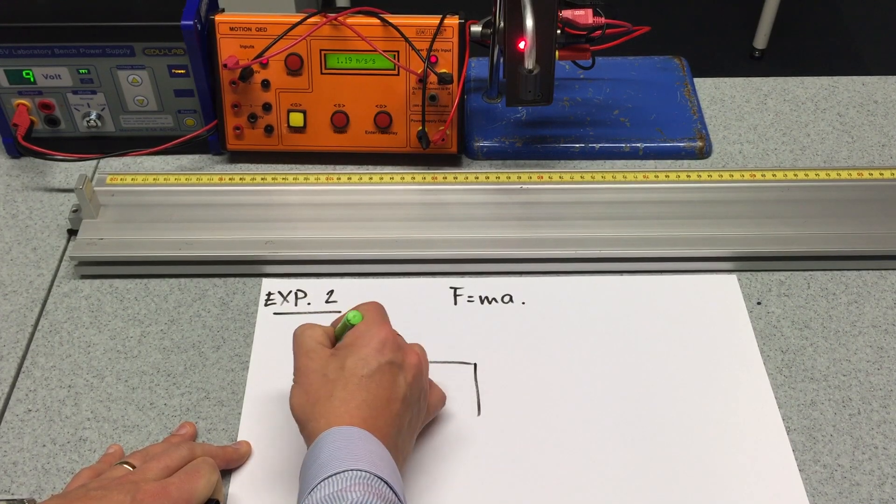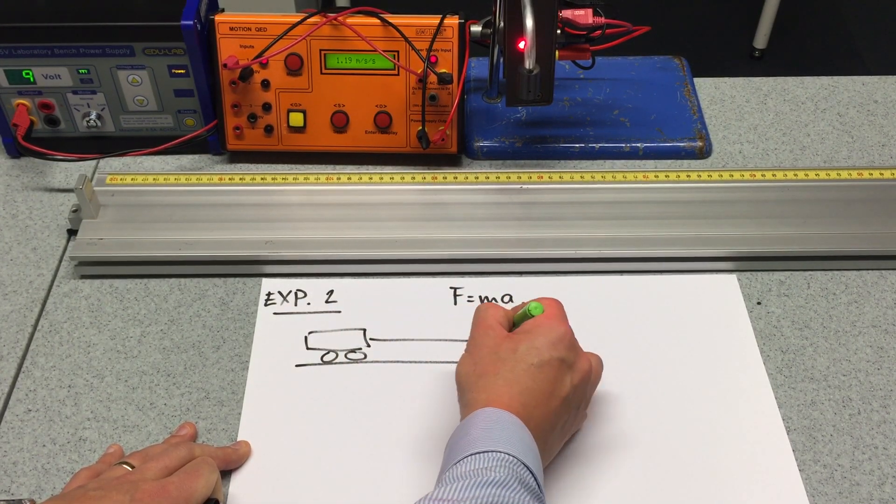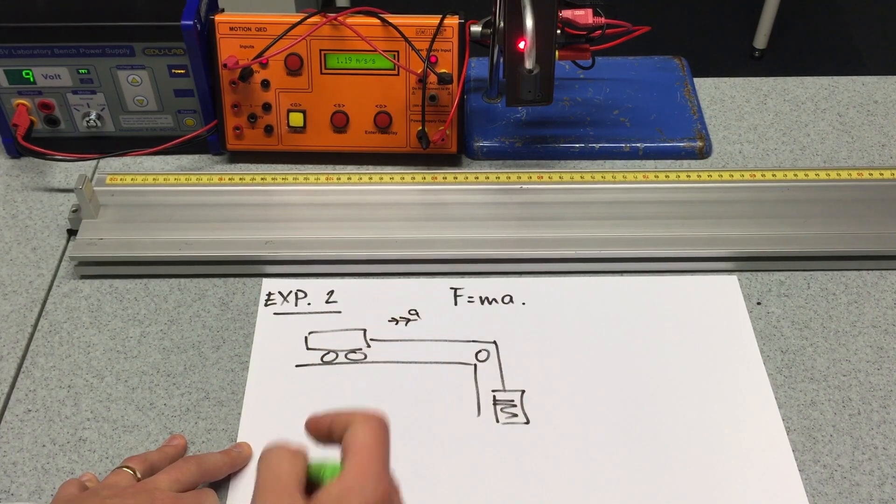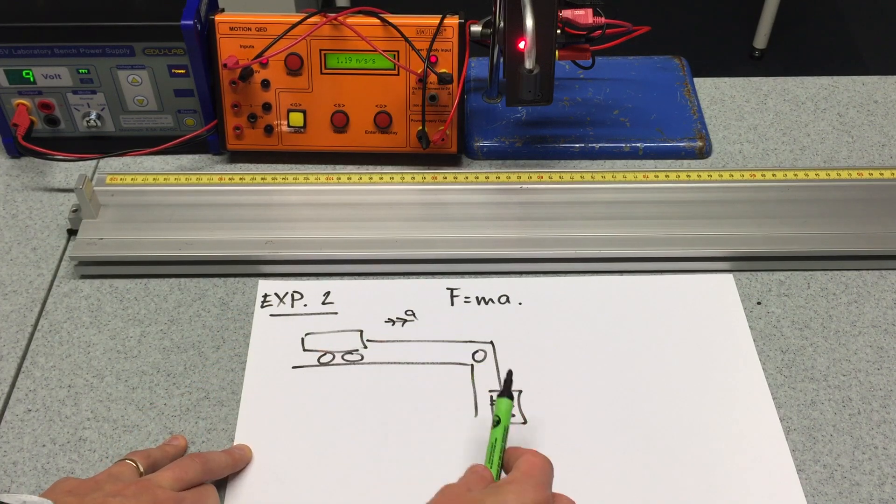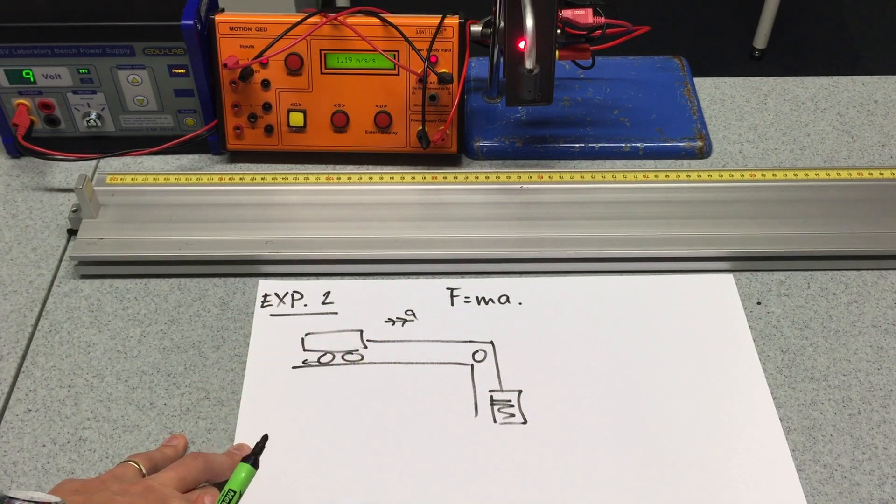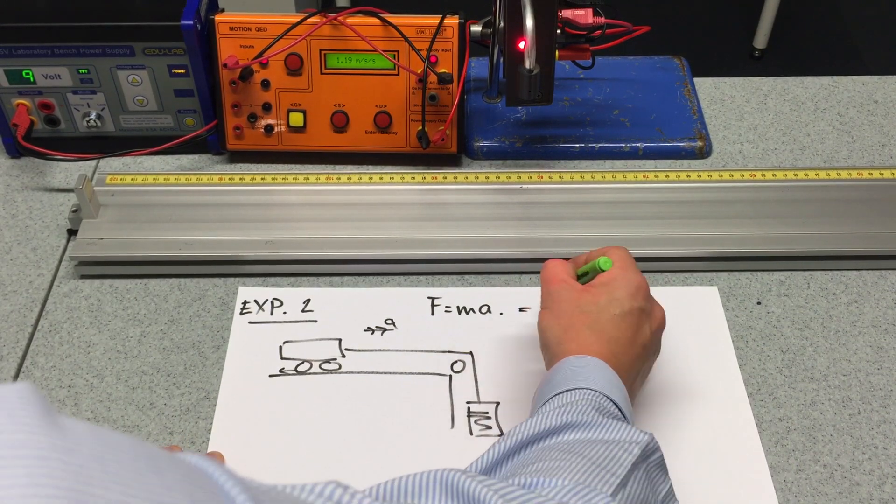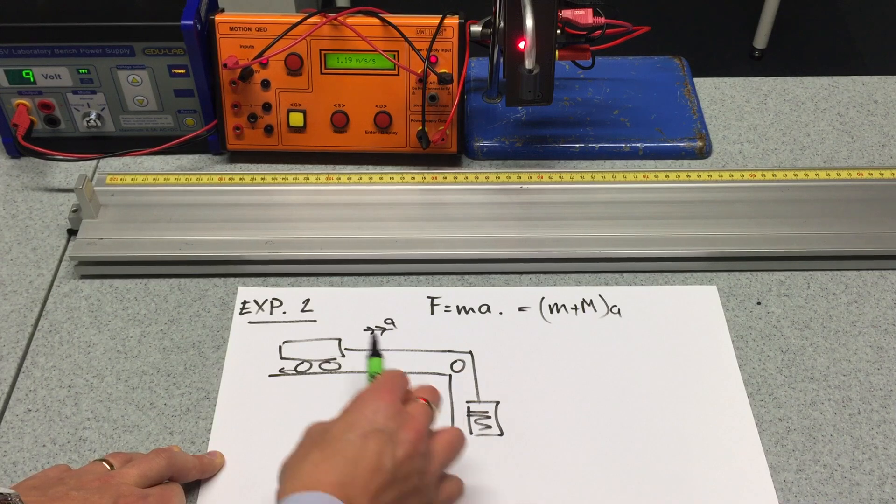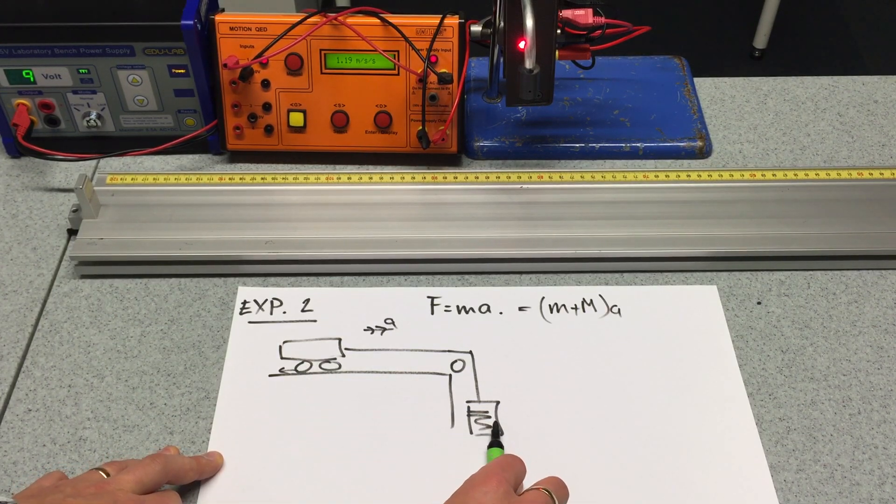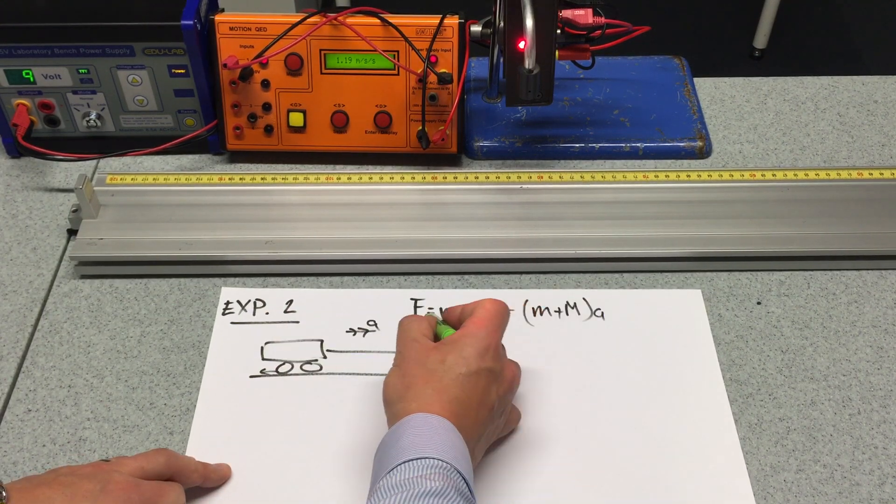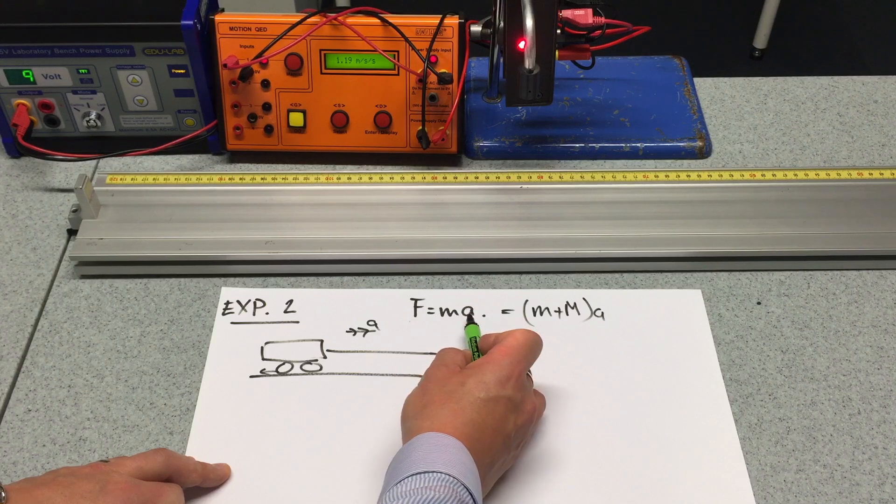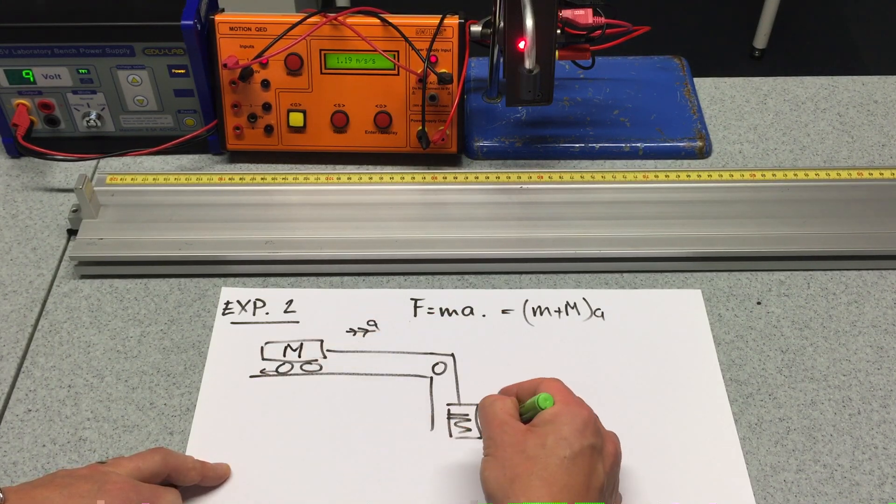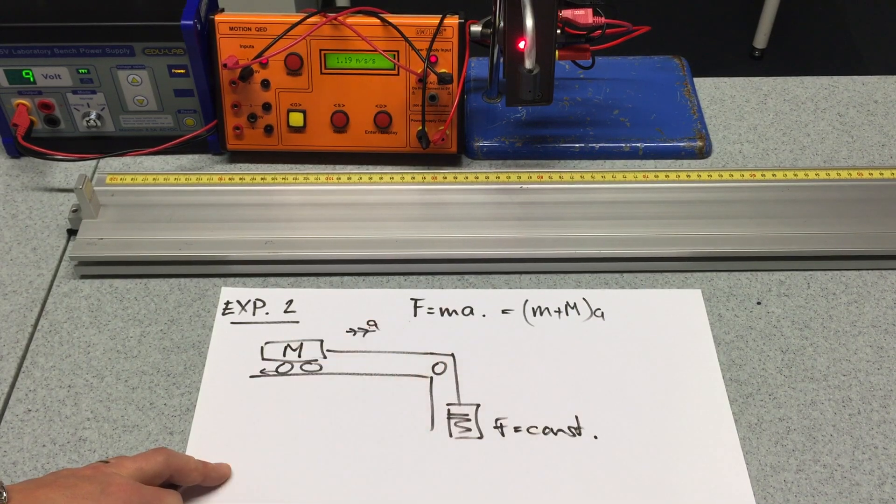In essence, what we have is we have a trolley on a track that's being driven by some weight to cause an acceleration. And if you look at video 1, it'll explain how we reduce, how we remove the necessary friction, and also how we can rearrange this to being M plus big M. In other words, it's not just this trolley we're interested in. It's the entire accelerating mass, which includes these as well. Experiment 1 changed the force and looked at how the acceleration varied. This one, we're going to change the mass whilst keeping the force constant, and therefore see how the acceleration varies.